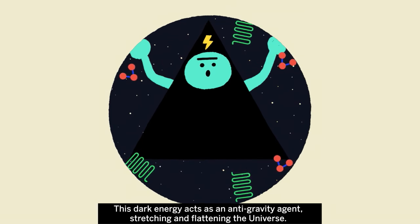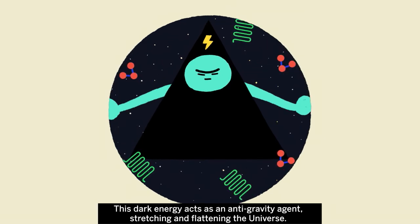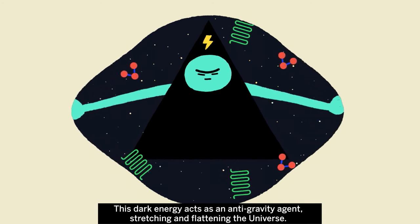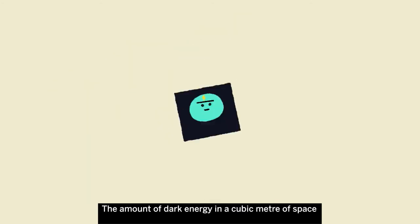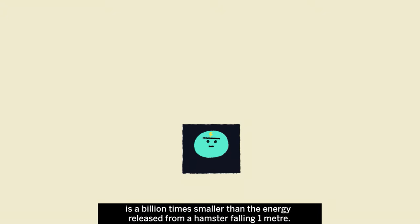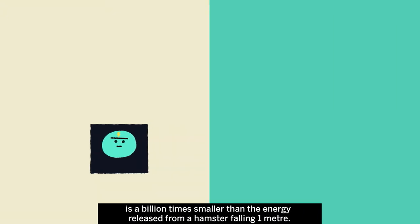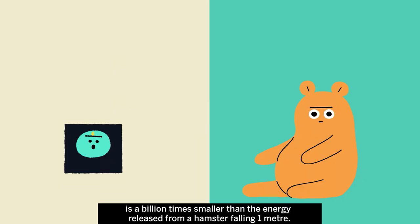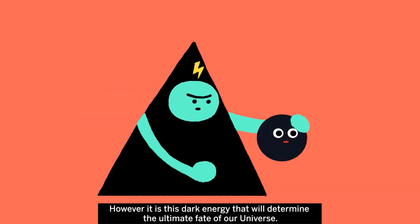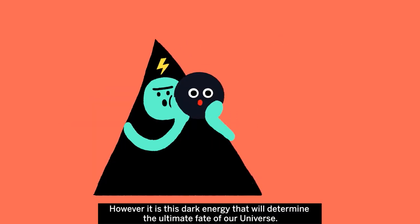This dark energy acts as an anti-gravity agent, stretching and flattening the universe. The amount of dark energy in a cubic meter of space is a billion times smaller than the energy released from a hamster falling one meter. However, it is this dark energy that will determine the ultimate fate of our universe.